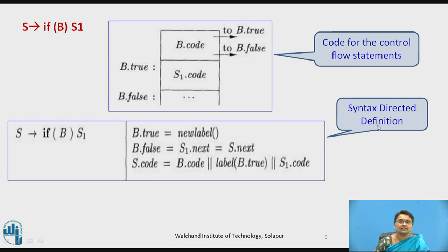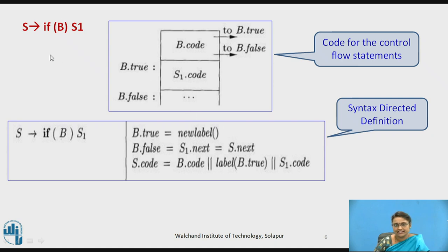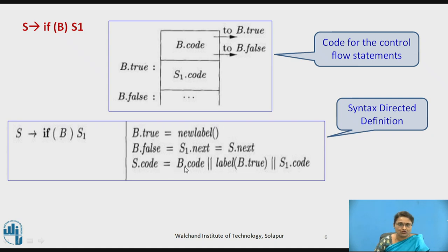For the syntax directed definition: B.true gets a new label; B.false is not a new label because it represents S1.next, which equals S.next — the next code after the current statement. The code for S is generated as: first B's code, then the label B.true is placed, then S1's code is written. We do not explicitly write the false label for B since it is taken directly as S1.next or S.next.